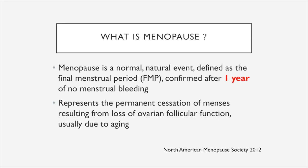So what is menopause? Menopause is a normal natural event defined as the final menstrual period confirmed after one year of no menstrual bleeding. The operative phrase here is one year of no menstrual bleeding. It represents the permanent cessation of menses resulting from loss of ovarian follicular function, usually due to aging.